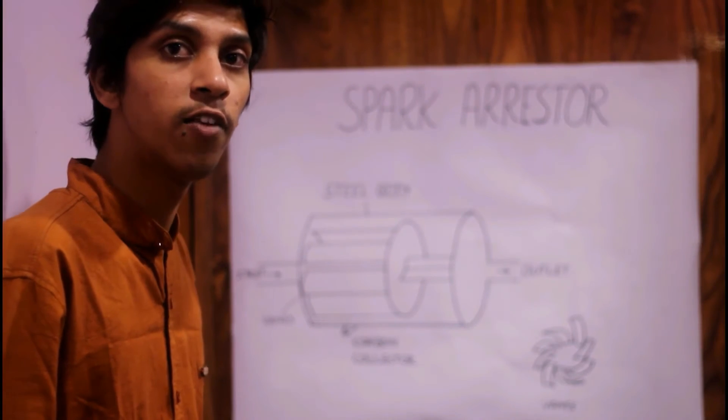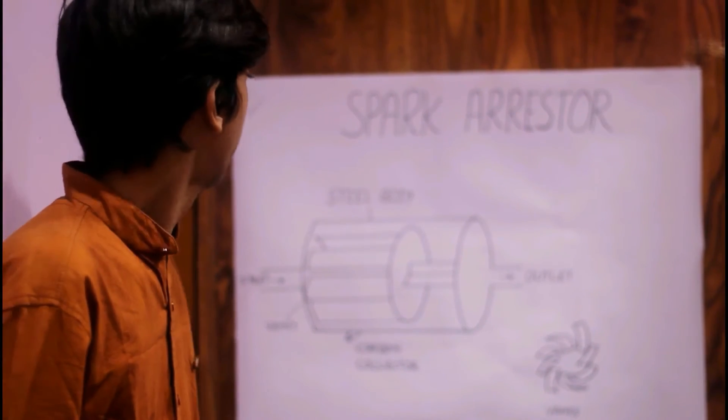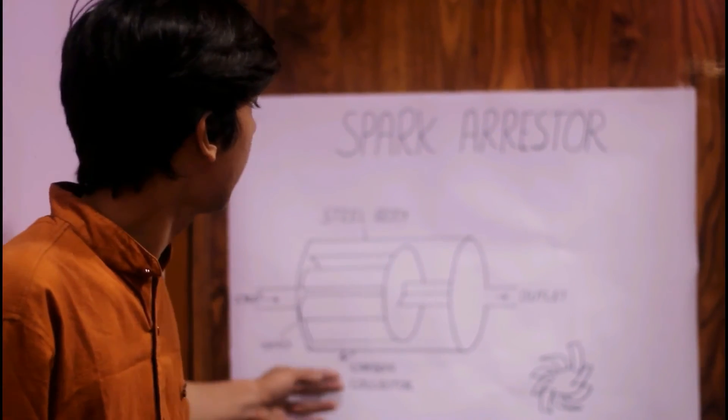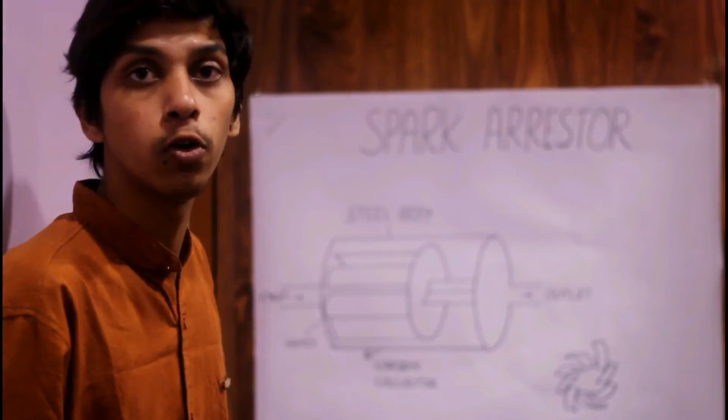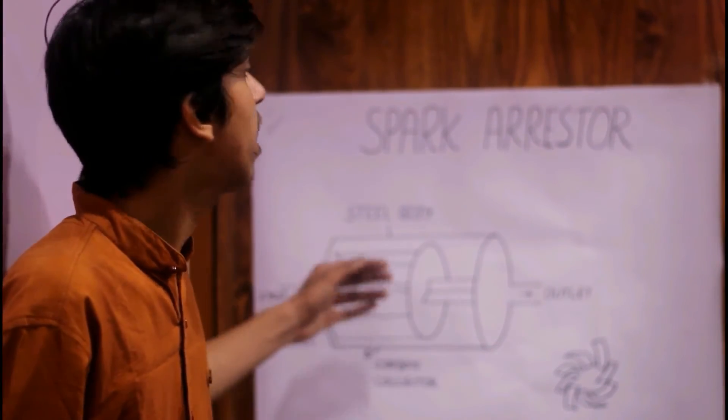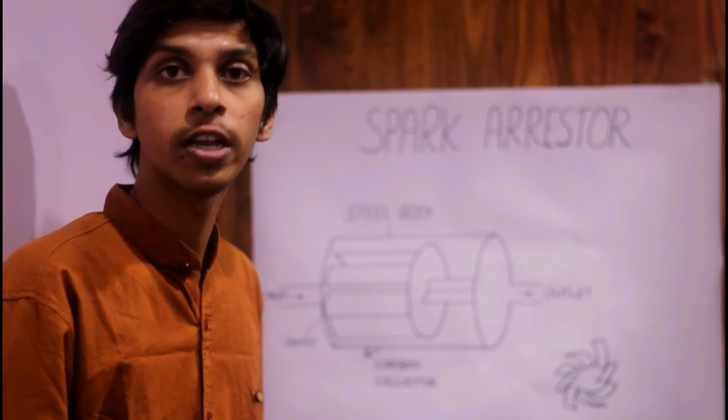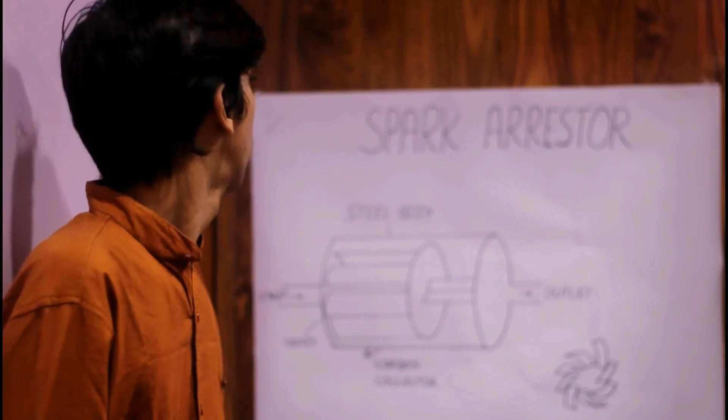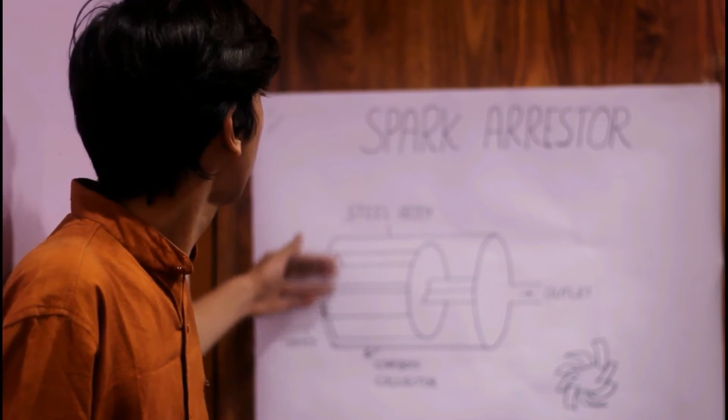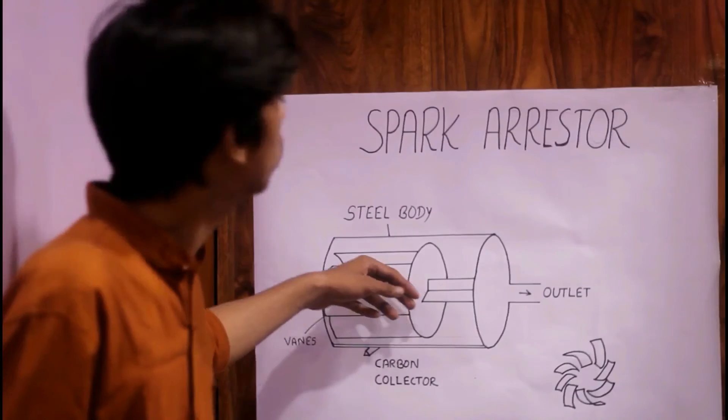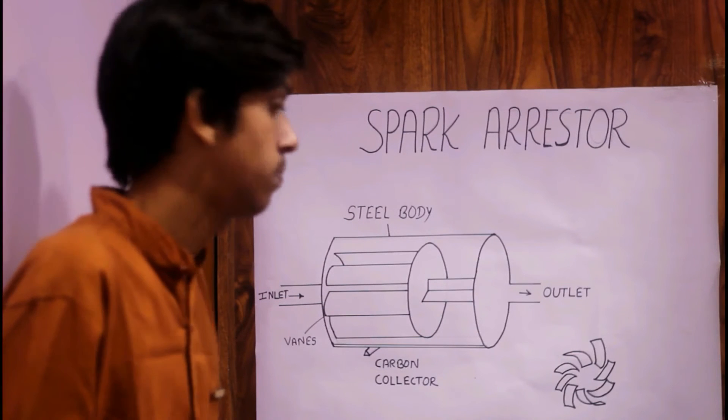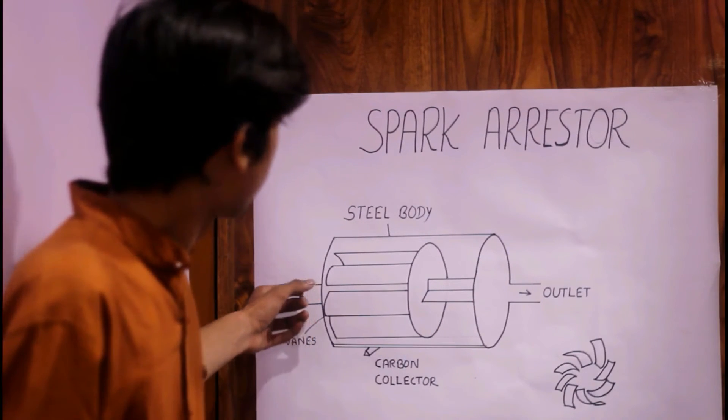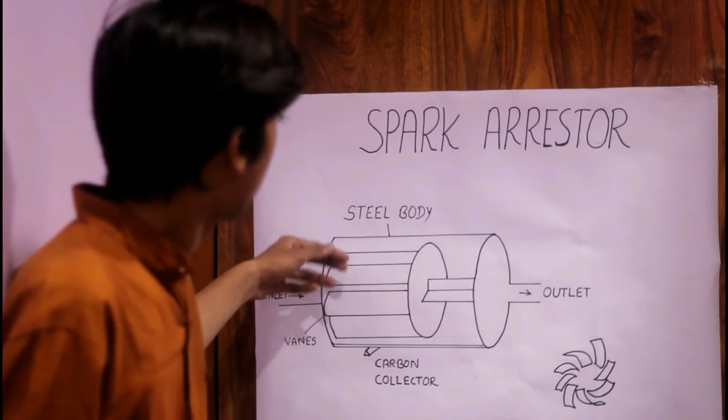Due to the centrifugal effect, the flammable debris is separated and collected in the carbon collector. Now we have the fresh exhaust gas which is ready to be released into the atmosphere. After this centrifugal effect, the exhaust gases go through this chamber and then are released into the atmosphere through the outlet.